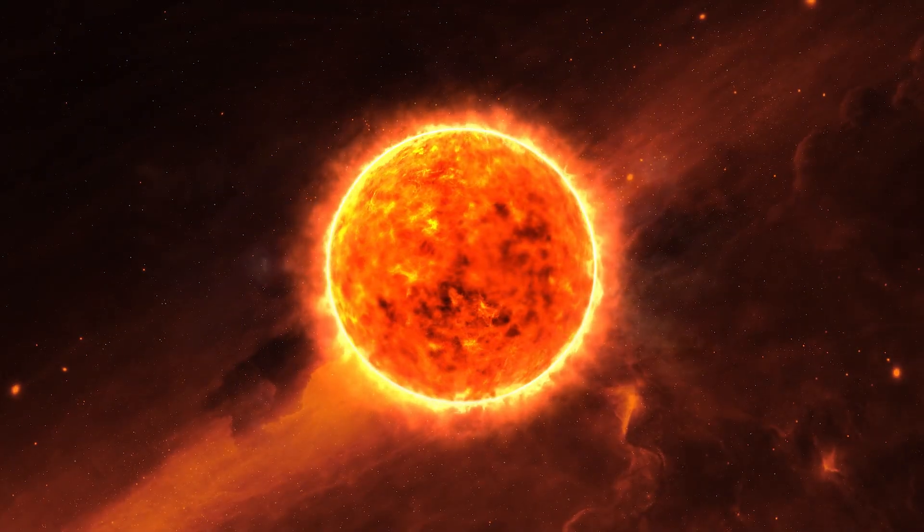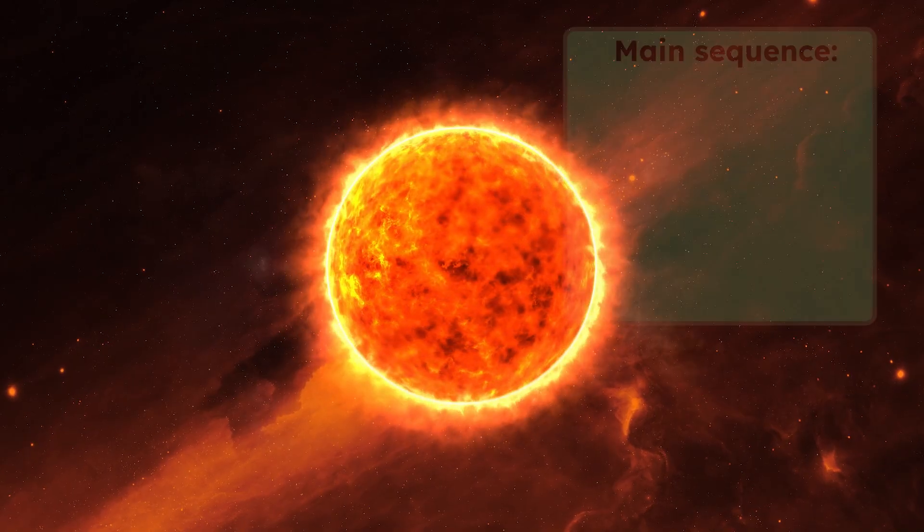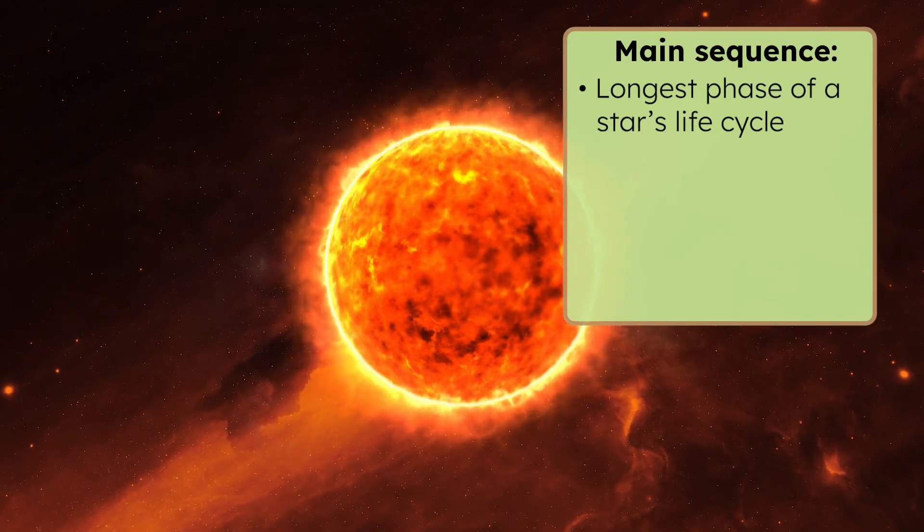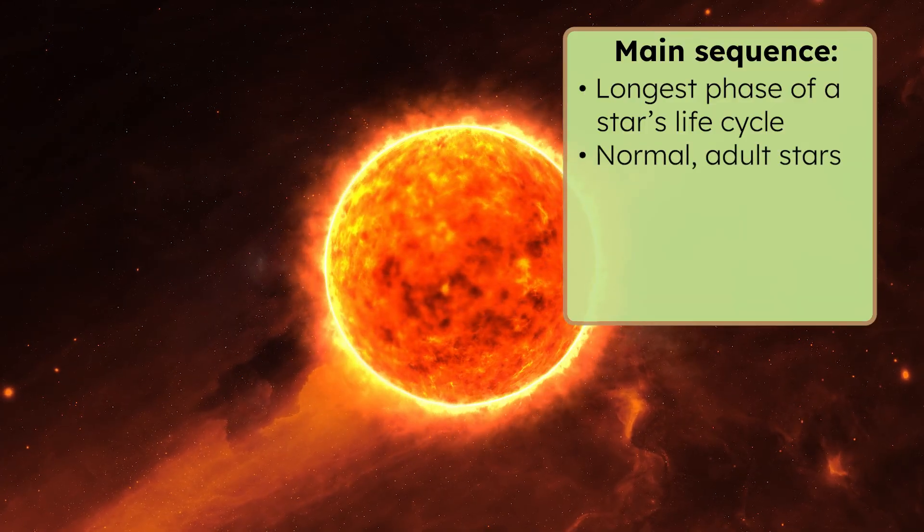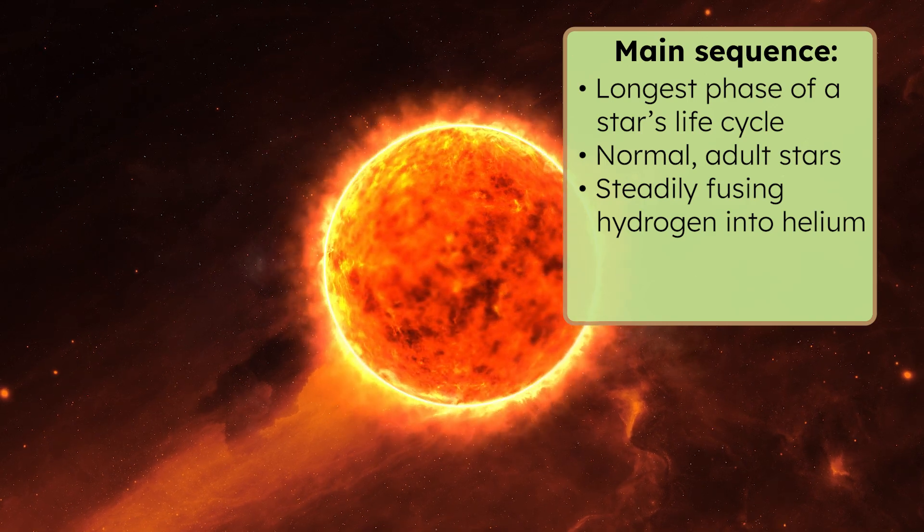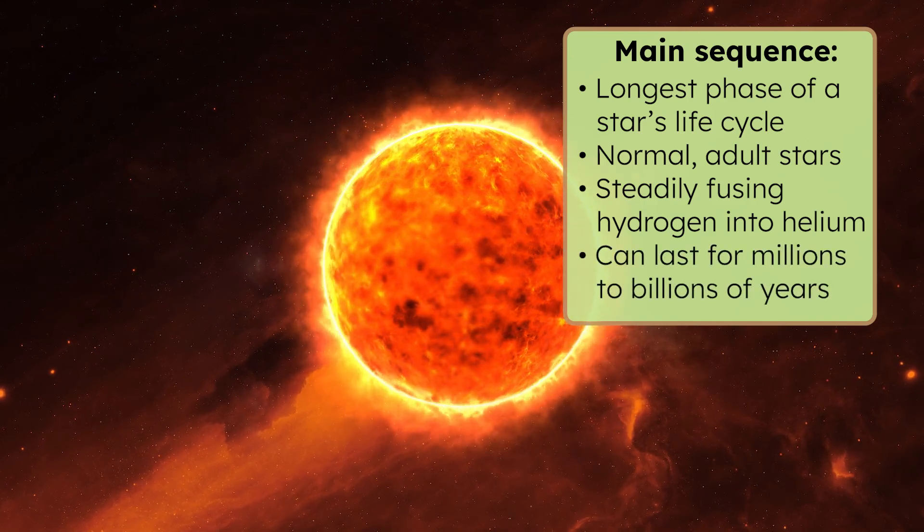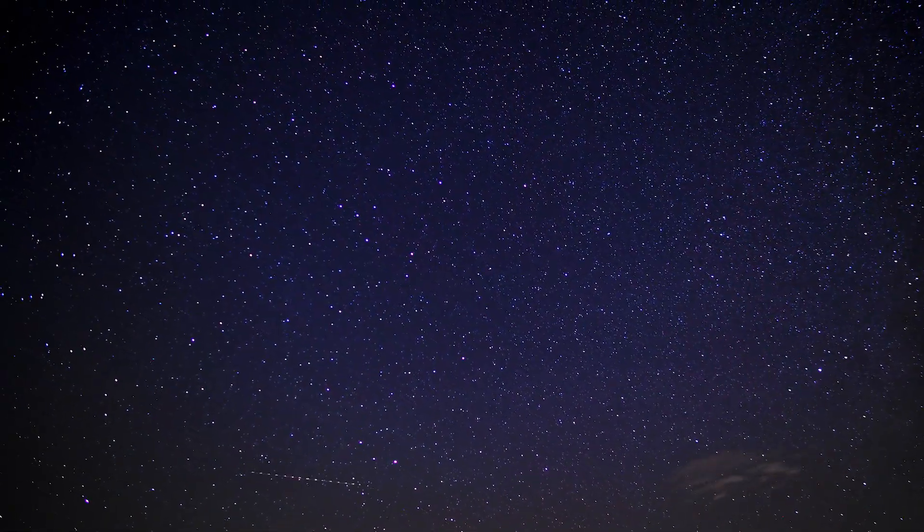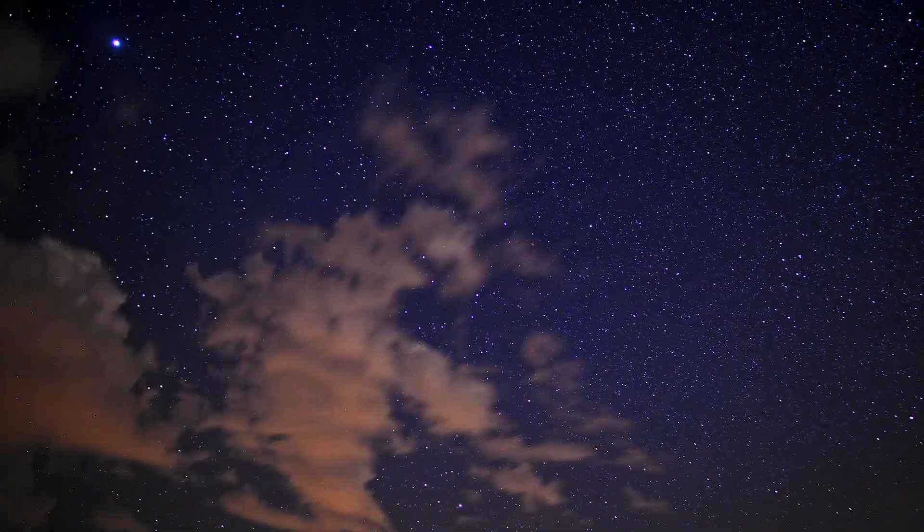We'll look more closely at how stars are born and die in upcoming lessons, but today we'll focus on the main sequence stage of a star's life. This is the longest phase of a star's life cycle, when it's a normal adult star living its best life. This is also when the star is steadily fusing hydrogen into helium in its core, and this can last for millions to billions of years, depending on the star's size. Most of the stars we see in the night sky, including some of the most famous ones, are in this main sequence stage right now.